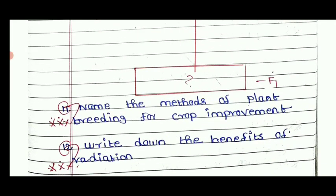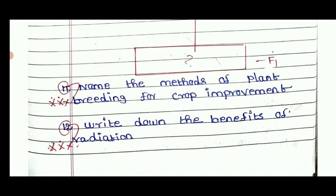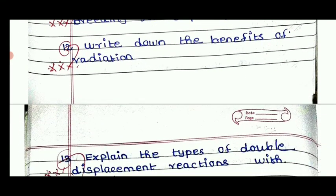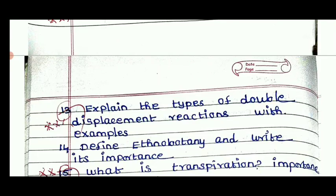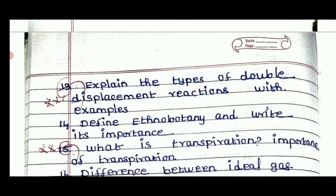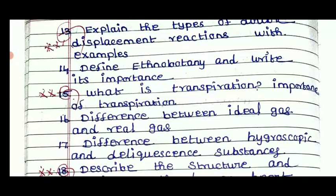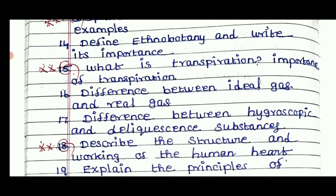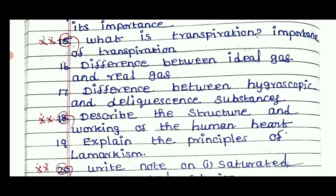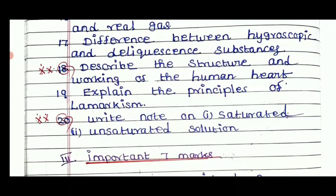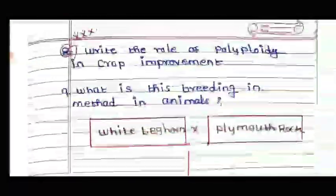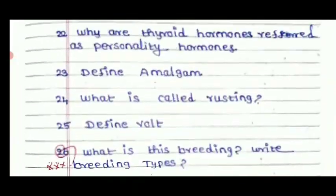Name methods of plant breeding for crop improvement. Write down the benefits of radiation. Explain the types of double displacement reactions with examples. Define ethnobotany and write its importance. What is transpiration and the importance of transpiration? Difference between ideal gas and real gas. Difference between hygroscopic and deliquescent substances. You can see these in 4-mark questions from the book-back and interior sections.